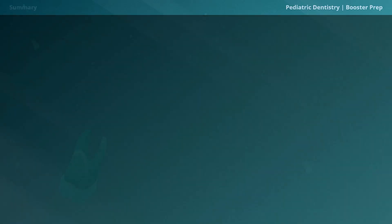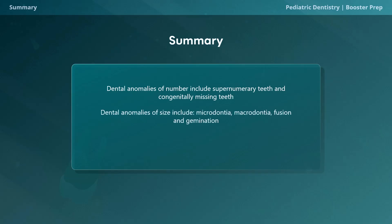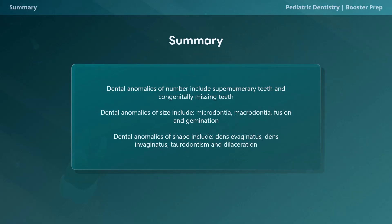To summarize today's discussion: dental anomalies of number include supernumerary teeth and congenitally missing teeth. Dental anomalies of size include microdontia, macrodontia, fusion, and gemination. And dental anomalies of shape include dens evaginatus, dens invaginatus, taurodontism, and dilaceration. Thank you for watching, and join us in part two where we will discuss anomalies of structure.